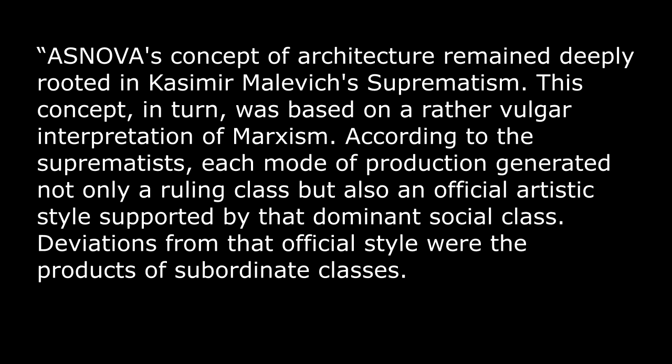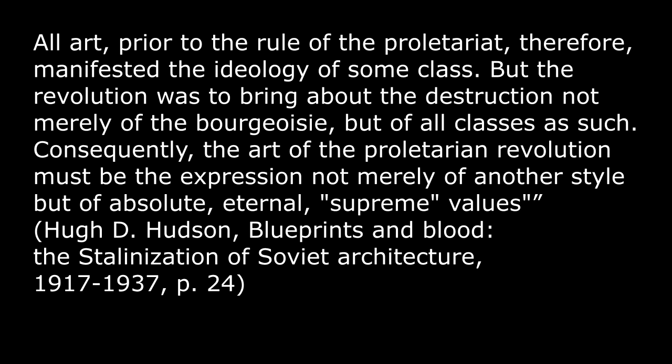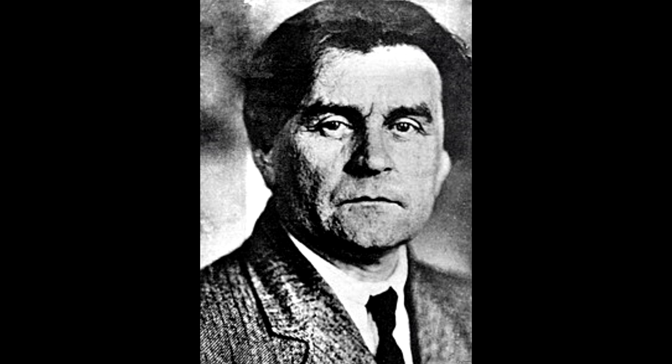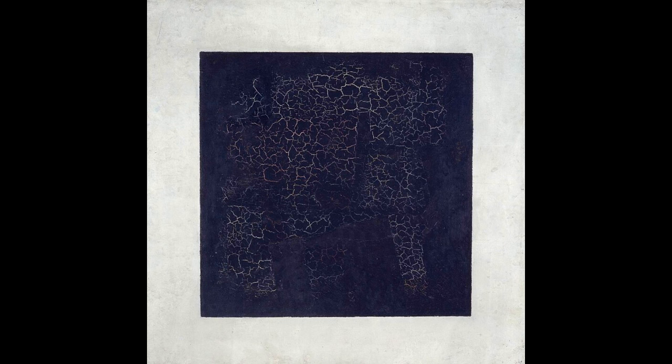The revolution was to bring about the destruction not merely of the bourgeoisie but of all classes as such. Consequently, the art of the proletarian revolution must express not merely another style, but absolute, eternal, so-called supreme values. As Hudson says, ASNOVA relied on the idealist views of Malevich, who believed there are certain absolute, eternal, supreme values which are both class-neutral and ahistorical. In paintings such as Black Square, Malevich tried to express these supreme ideas by maximum abstraction, with only two-dimensional geometric shapes and flat colors.